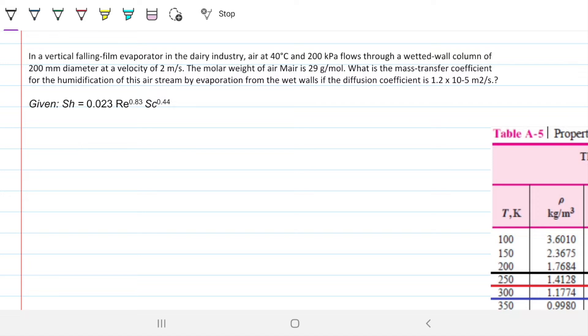In a vertical falling film evaporator in the dairy industry, air at 40 degrees Celsius and 200 kilopascals flows through a wetted wall column of 200 millimeters diameter at a velocity of 2 meters per second. The molar weight of air is 29 grams per mole. What is the mass transfer coefficient for the humidification of air stream by evaporation from the wet walls if the diffusion coefficient is 1.2 times 10 to the minus 5 meters squared per second?